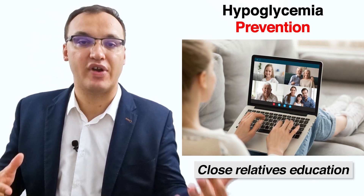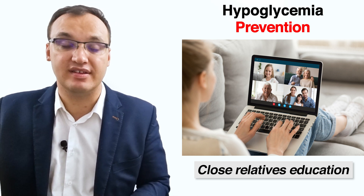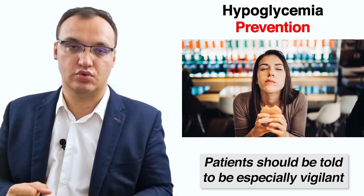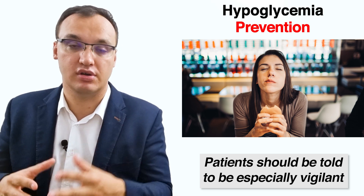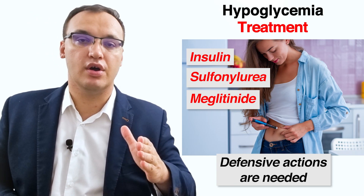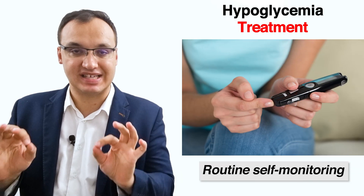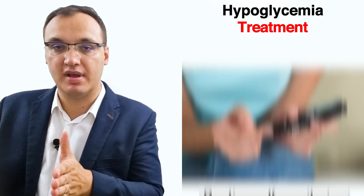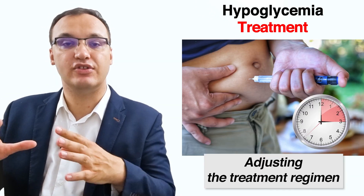Close relatives or friends, such as a spouse or partner, should be taught to recognize severe hypoglycemia and treat it immediately with glucagon. Patients should be told to be especially vigilant following an episode of hypoglycemia and be wary of over-treating developing hypoglycemia with oral carbohydrates or glucagon. For a person treated with insulin, a sulfonylurea, or a meglitinide, defensive actions are needed: self-monitoring, checking glucose routinely, repeating the measurement in the near term, avoiding critical tasks such as driving, ingesting carbohydrates, and adjusting the treatment regimen.